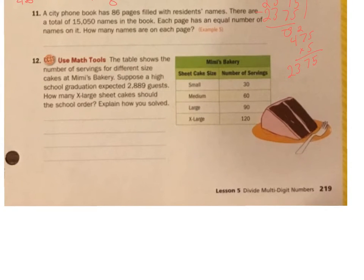Number 11. A city phone book has 86 pages filled with residents' names. There are a total of 15,050 names in the book. Each page has an equal number of names on it. How many names are on each page? I'm going to come over here and do this one. 15,050 divided by how many pages? 86. 86 does not go into 1. 86 doesn't go into 15. 86 does go into 150. And 2 would be like 170 or something. So I think just 1 will get us going here. That becomes a 4, that becomes a 10. So there's 4, that's a 0, that's a 14, 6, 64.